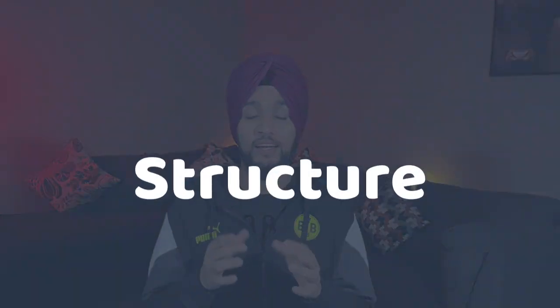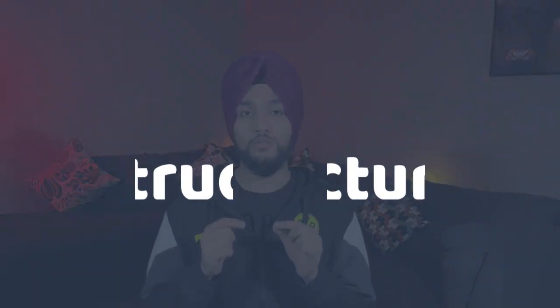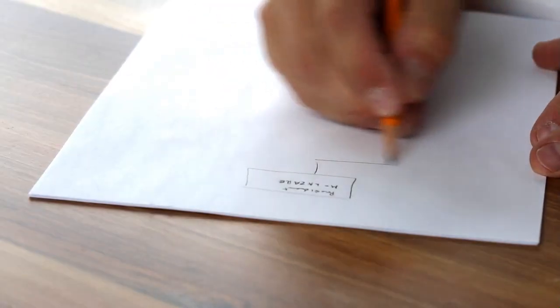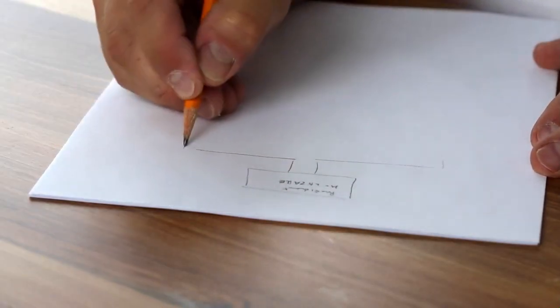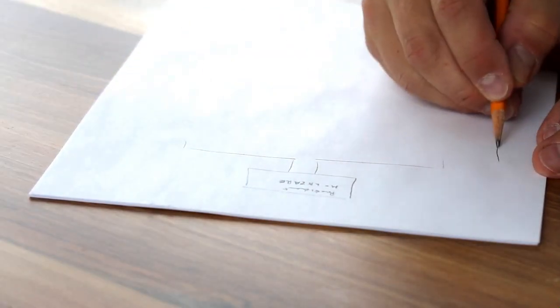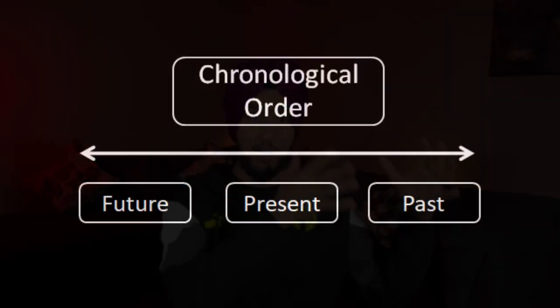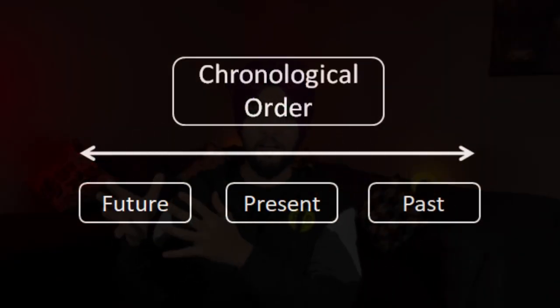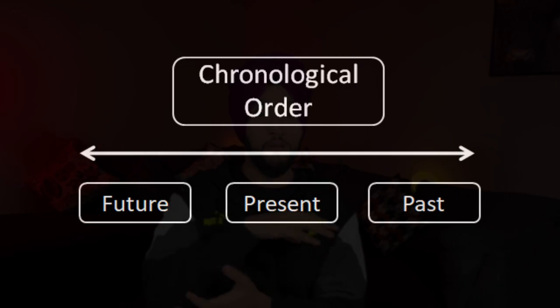Number 1. Your answer should always have a structure, and especially for part 2 where you are supposed to speak for a minute or two. By structure, I actually mean your thought process. There are several techniques of including structure in your answer, but my favorite is chronological order, which is past, present, and future. It can be the other way around as well — future, present, and past. Confused? Let's take an example for that.